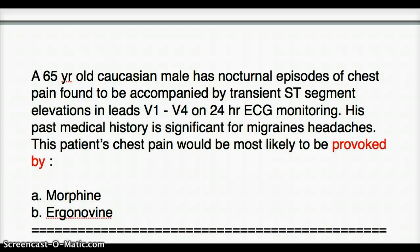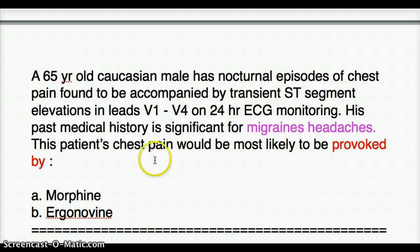The migraine headaches and his coronary vasospasm really have no correlation. I think it was thrown in to make the connection to drugs used in migraine headaches — for example, sumatriptan can cause similar effects on the heart, including transient hypertension and coronary vasospasm. This is an outlier meant to confuse you. So even though this person has migraine headaches, it has nothing to do with the question itself.